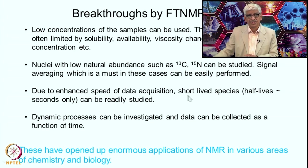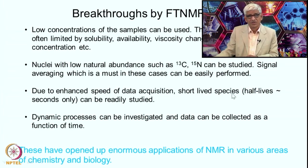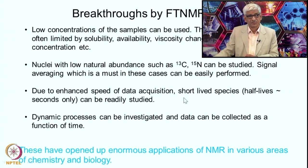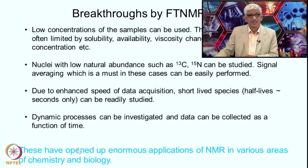This advancement means you can use low concentrations of samples — concentrations often limited by solubility, availability, or viscosity at high concentration. Nuclei with low natural abundance such as carbon-13 and nitrogen-15 can now be studied. Signal averaging, which is essential in these cases, can be easily performed by co-adding as many FIDs as needed before a single Fourier transformation. Due to enhanced speed of data acquisition, short-lived species with half-lives of only seconds can be readily studied, and dynamic processes such as exchange or rotational phenomena can be investigated as a function of time.